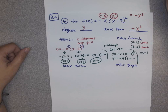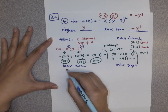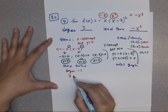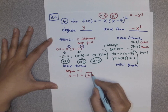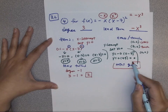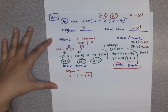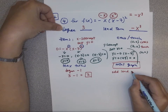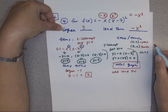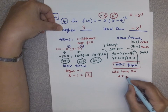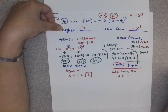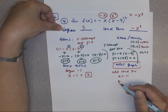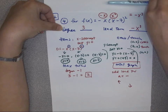Maximum turns: degree minus one. We have degree three, so maximum turns = 2. For the mini graph, degree three is an odd leading power with a negative leading coefficient — that means left side up, right side down — and maximum turns of two.